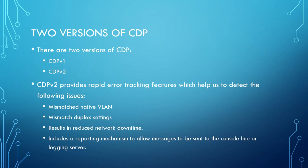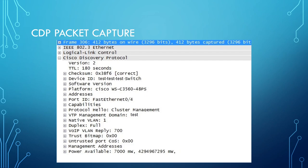There are two versions of CDP: CDP version 1 and CDP version 2. The benefits of CDP version 2 include rapid error tracking features that help detect issues quicker, such as mismatched native VLANs over a trunk link, or duplex setting mismatches. It also results in reduced network downtime because it can track these errors faster and report them. It includes a reporting mechanism that sends messages to the console line or to a centralized syslog server.